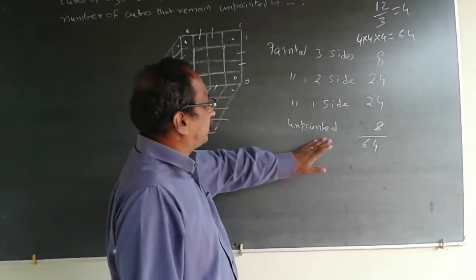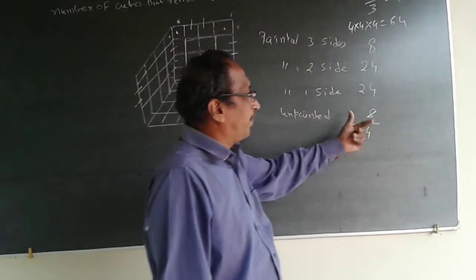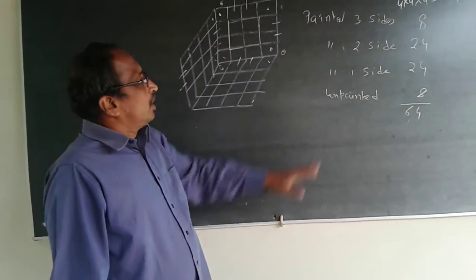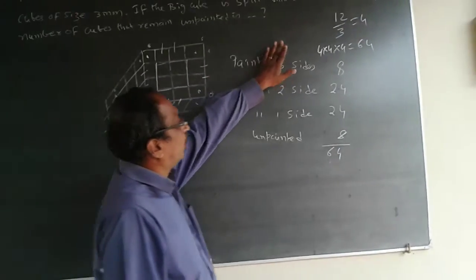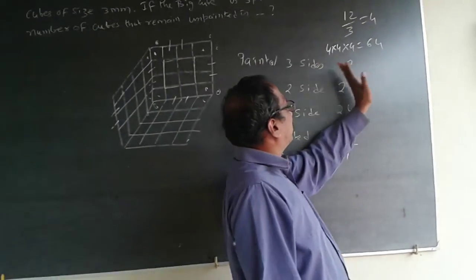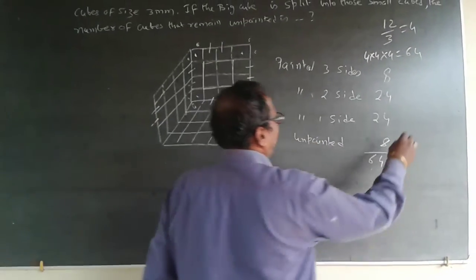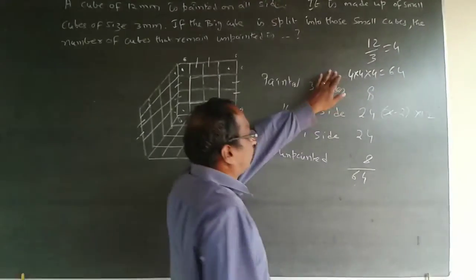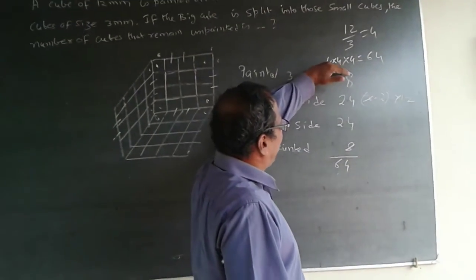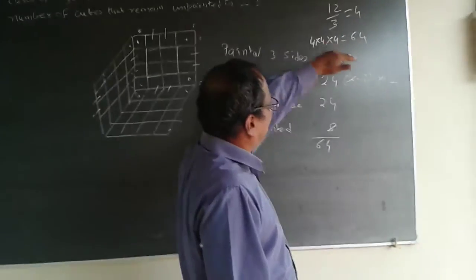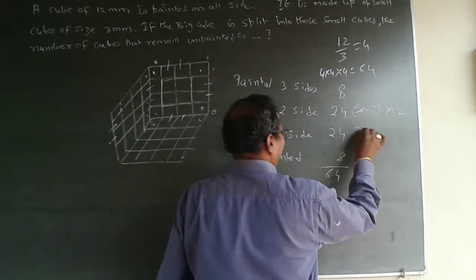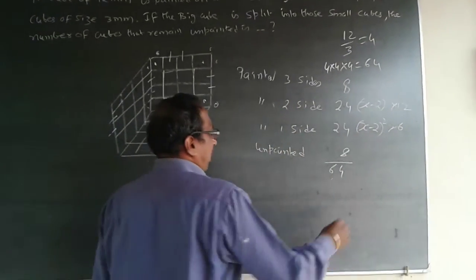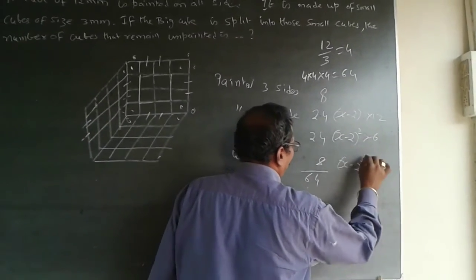So the answer is unpainted cubes = 8. I also devised a formula: painted three sides will always be 8, whether it is 4×4×4, 5×5×5, or 6×6×6. Painted two sides = (x − 2) × 12, where x is 4 here. Painted one side = (x − 2)² × 6. And unpainted = (x − 2)³. For x = 4: (4 − 2)³ = 2³ = 8 unpainted cubes.